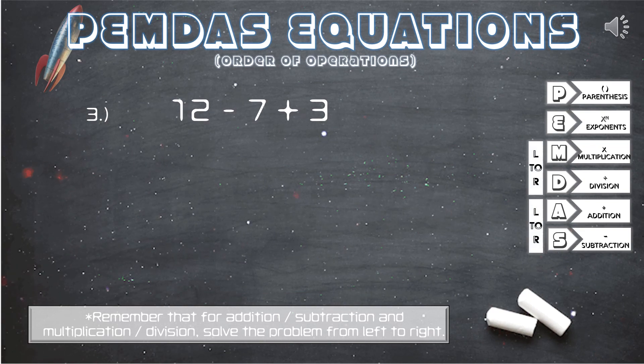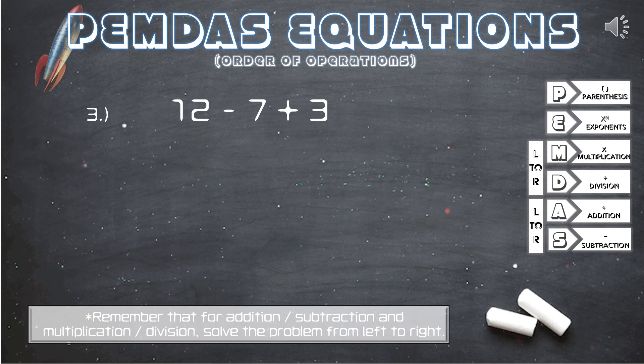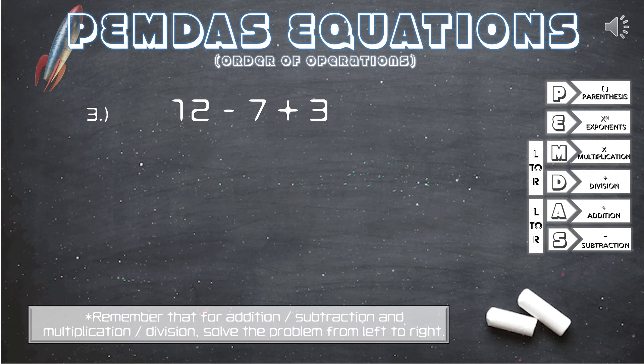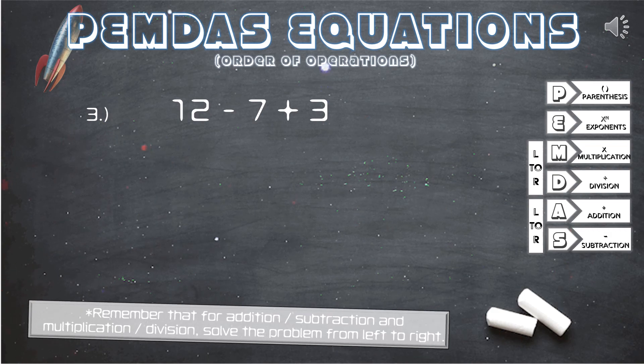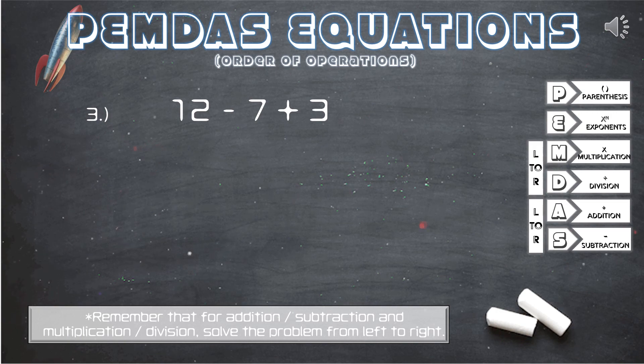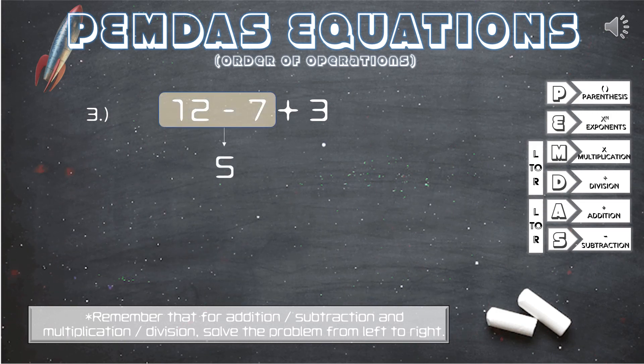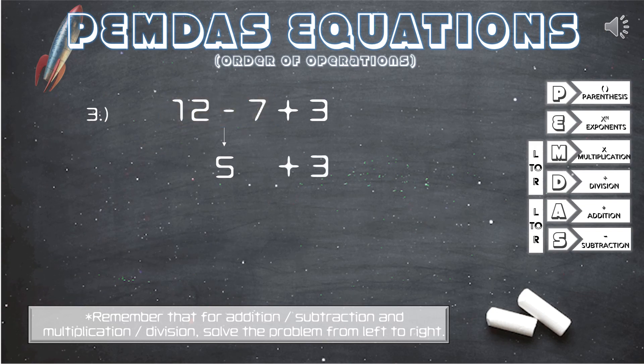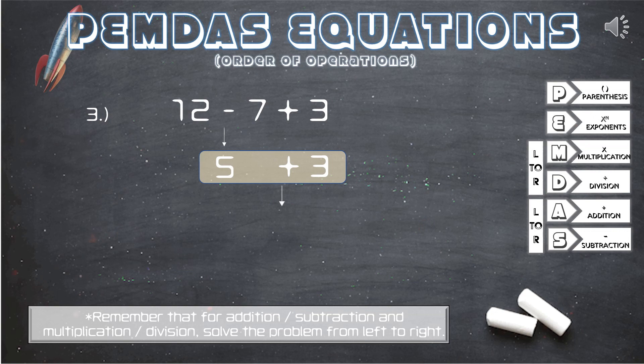Question 3. 12 minus 7 plus 3. Here again we have subtraction and addition, so we will solve this equation from left to right. This time subtraction is first. 12 minus 7. This gives us 5. We bring down the 3 and now we have 5 plus 3. And our answer is 8.